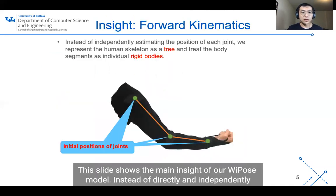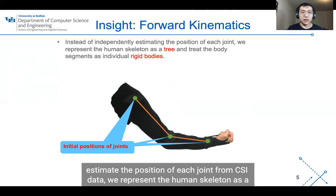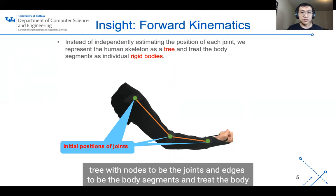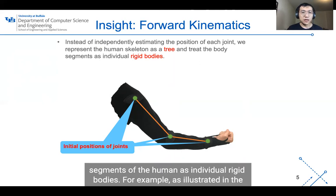This slide shows the main insight of our Wi-Pose model. Instead of directly and independently estimating the position of each joint from CSI data, we represent the human skeleton as a tree with nodes as joints and edges as body segments, treating the body segments of the human as individual rigid bodies.